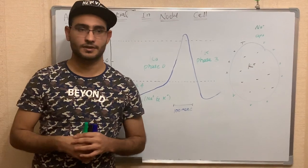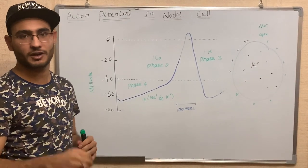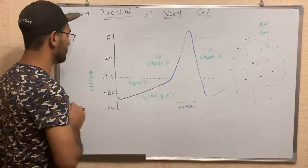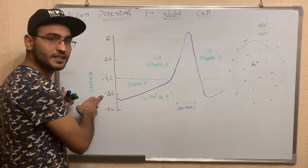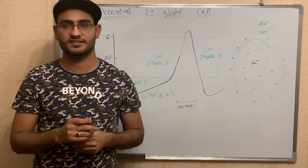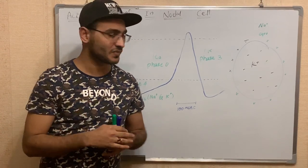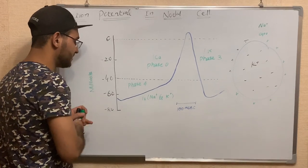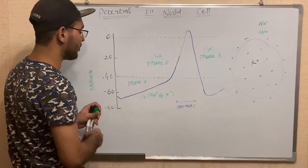Today we are going to discuss the action potential in nodal cells or the action potential in myocardium cells. The resting membrane potential of the nodal cell is mainly above -65 or -60 millivolts. The resting membrane potential is the potential at which the cell is at rest. When the nodal cell is at rest, it is shown in the graph as phase 4.